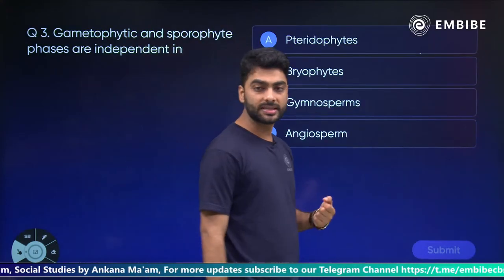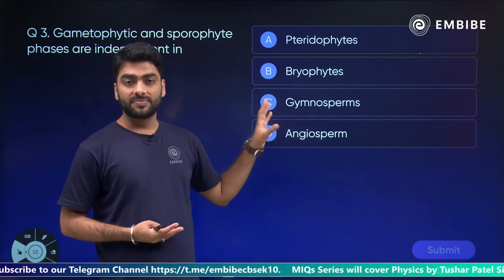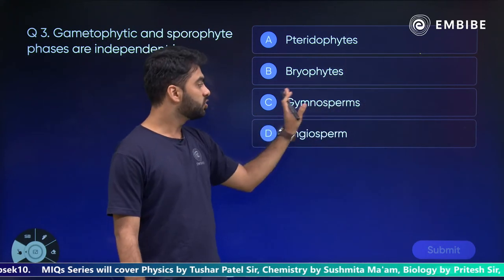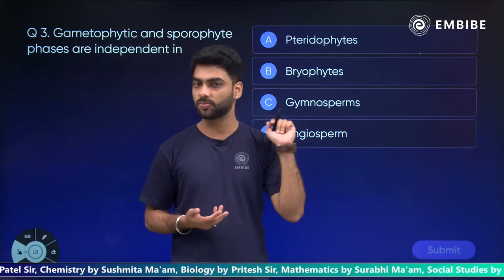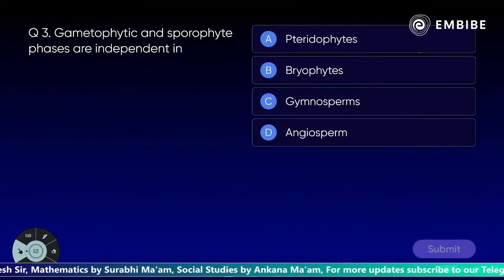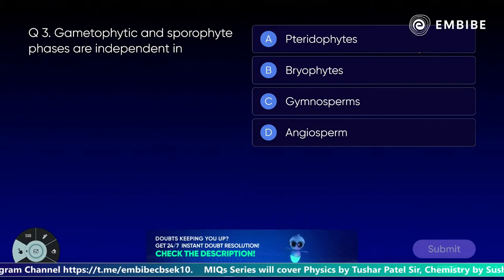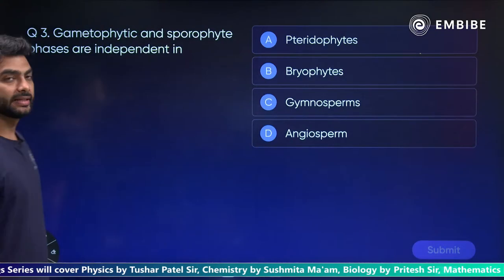Next question: gametophytic and sporophytic phases are independent in which of these organisms? Which have separate gametophytic and sporophytic phases? Pteridophytes (ferns), Bryophytes (mosses), Gymnosperms (non-flowering like cycas), or Angiosperms (flowering plants)? Think and answer — I'll give you 20 seconds. Your time starts now. 4, 3, 2, and 1.